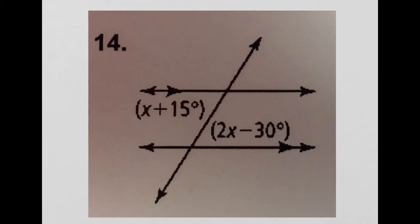So in number 14, I see that these two lines are parallel, and the way I can tell is that they have the same number of arrows marking them here. So if two lines are parallel, then by the alternate interior angles here, my alternate interior angles, which are these guys here, are going to be congruent. So that means that their measures are equal, which means that I can set up the equation x plus 15 equals 2x minus 30.